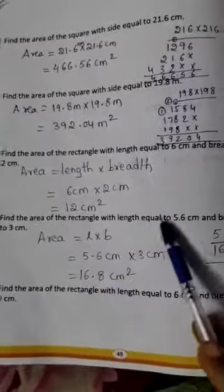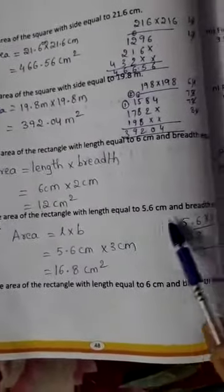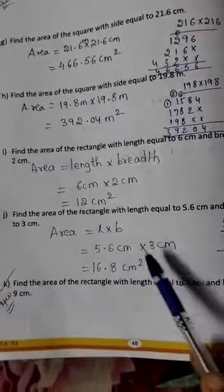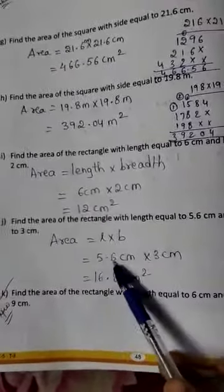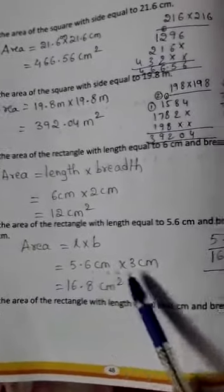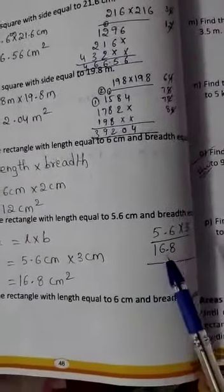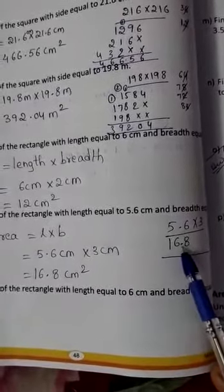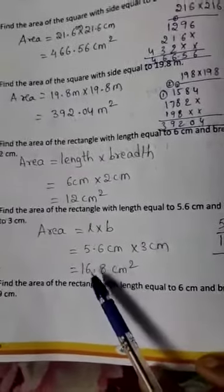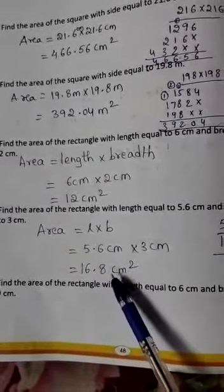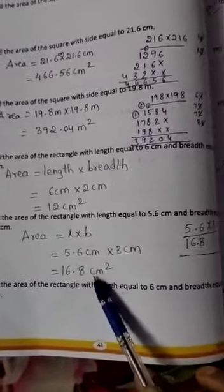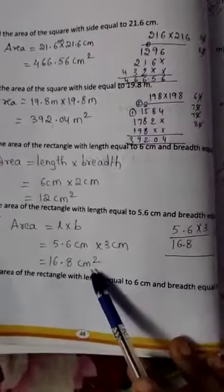Length is 5.6 cm. Breadth is equal to 3 cm. So, multiply 5.6 into 3. Remove the point and do 56 into 3. So the answer is 16.8 cm square.